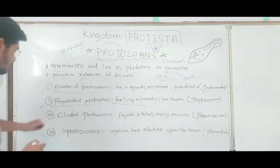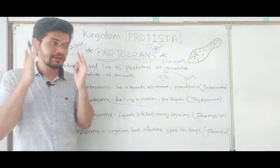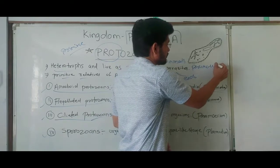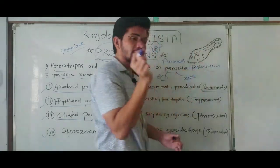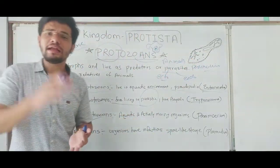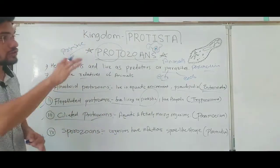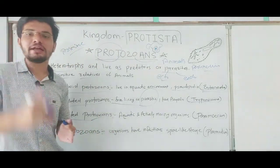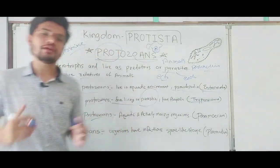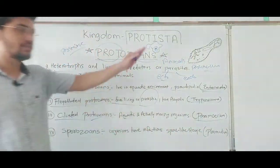The third category is ciliated protozoans. They have cilia on the surface of their cell — short hair-like structures, as seen in the figure of Paramecium. They use cilia for movement and crawling. They also possess a gullet or cavity that opens outside the cell surface, which they use to engulf food material.